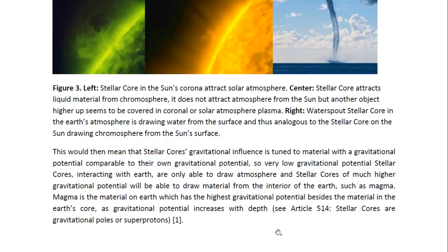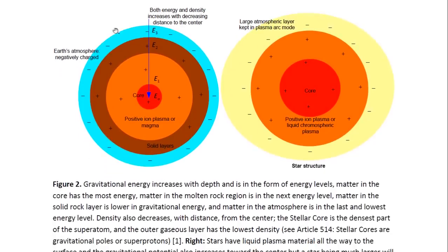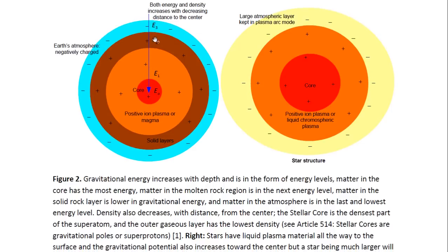You may look at Article 514 entitled 'Stellar Cores or Gravitational Poles or Super Protons.' Here you see an illustration of the Earth or another planet which has a core. All celestial objects have a core, which is what generates the object's gravitational field. It also generates the positive electric field that the planet has. The gravitational potential of the object increases as we move towards the center of the celestial object — it increases with depth and decreases with distance from the center. So the material in the atmosphere will have the lowest gravitational potential, and the material in the magma closest to the surface of the object will have the highest.